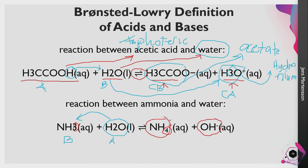In this reaction, ammonium (NH₄⁺) is our conjugate acid, because it is the molecule formed after accepting a proton or hydrogen ion. The hydroxide ion is our conjugate base, because it is the substance left behind after water donated a proton. From H₂O, after losing one hydrogen, what remains is the hydroxide ion.